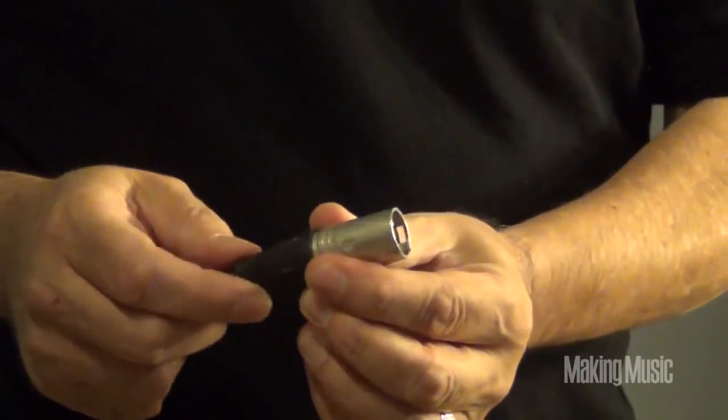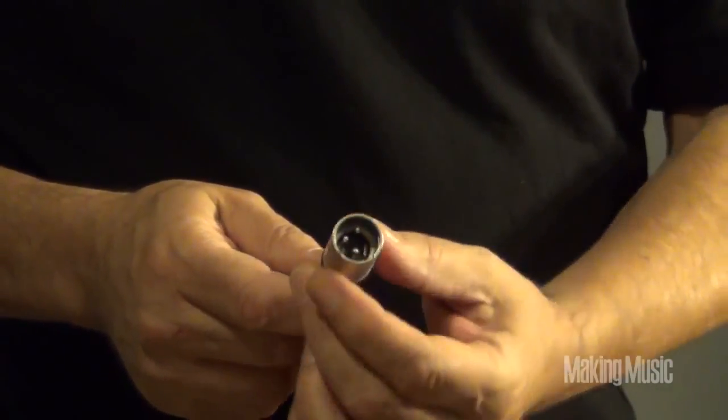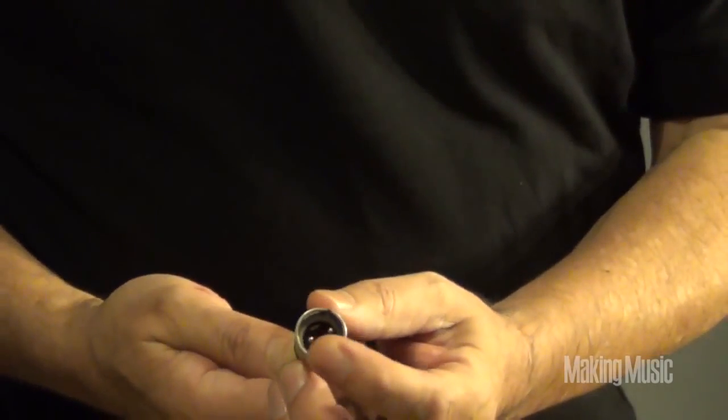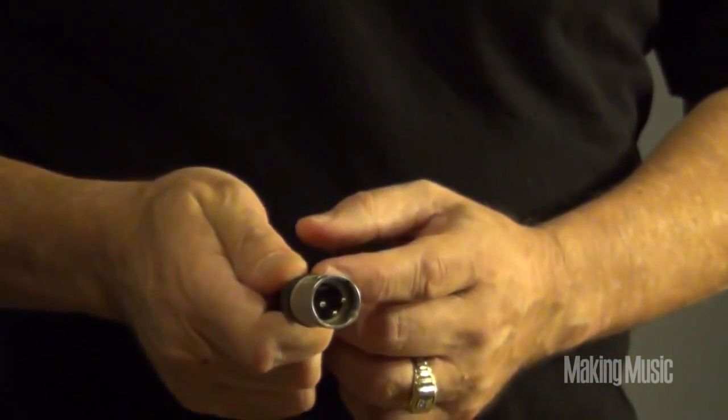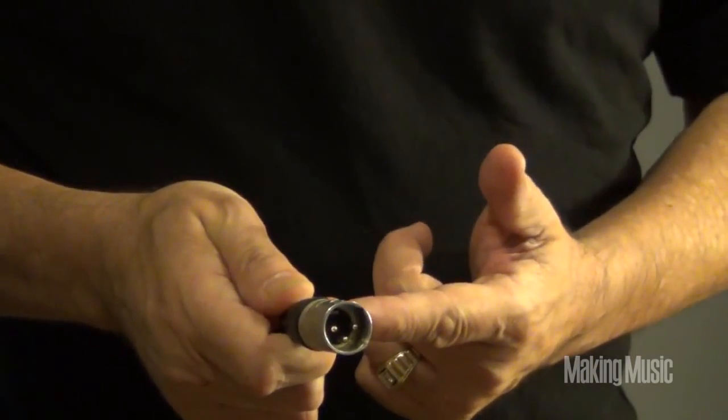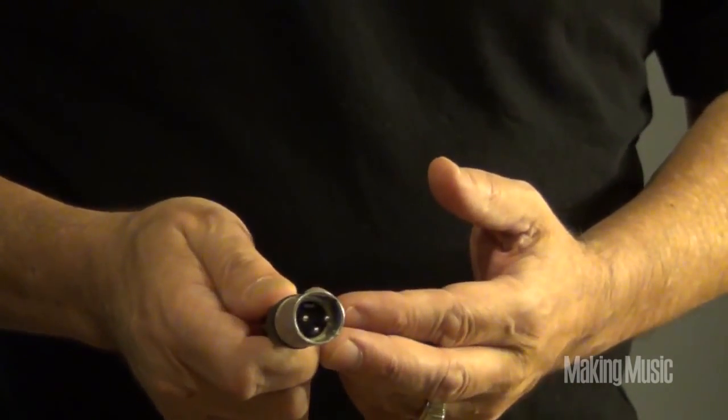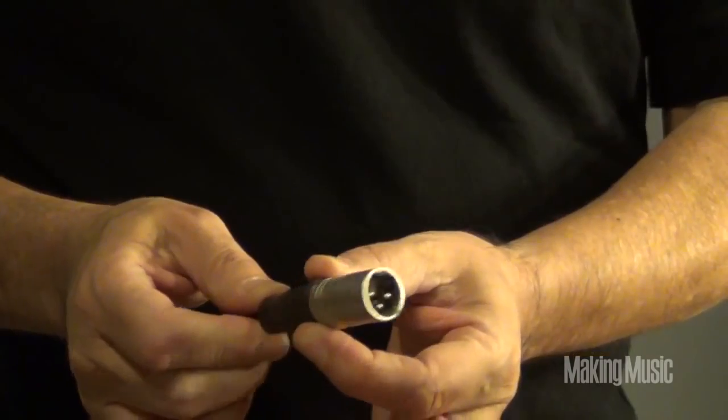At the other end, you've got the male end. Tip ring sleeve connection. You can see the three pins right there. That will go right into your console or into a preamp to boost the signal up a little bit. Mic cable, XLR.